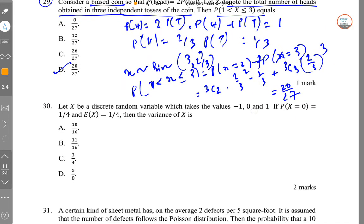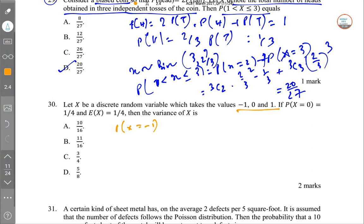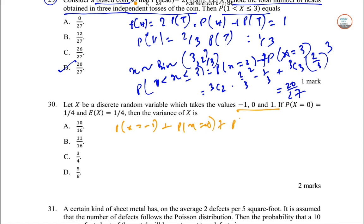Let X be a discrete random variable which takes values -1, 0, and 1. If P(X=0) = 1/4 and E(X) = 1/4, then find the variance of X. Since P(X=0) = 1/4, we have P(X=-1) + P(X=1) = 1 - 1/4 = 3/4.